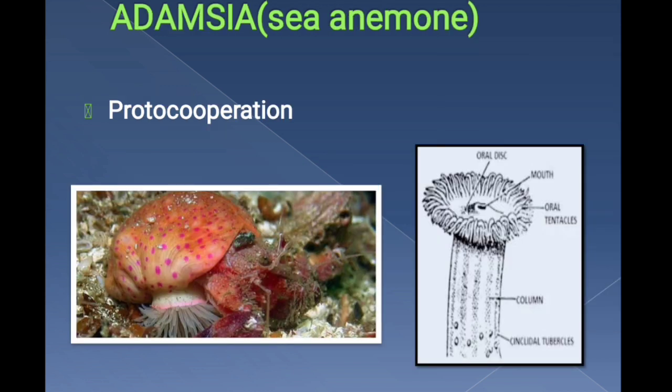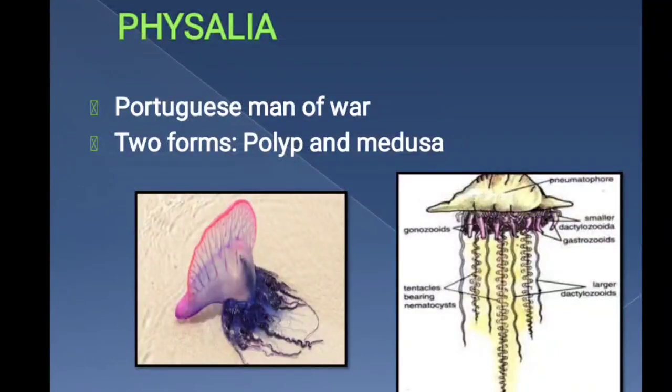Adamsia is known as sea anemone. One of its important characteristics is proto-cooperation, which means a relationship where both organisms benefit from each other but the association is not permanent. The proto-cooperation of Adamsia is with hermit crabs.